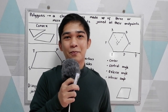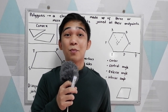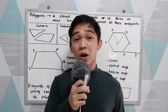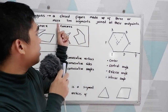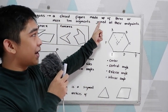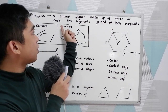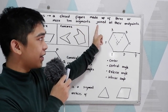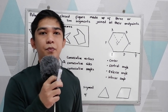Good day everyone. Today we will be discussing polygons. When we say polygons, it is a closed figure made up of three or more line segments joined at their end points.